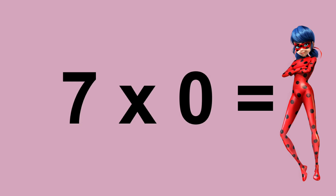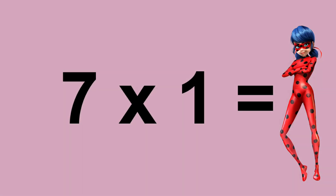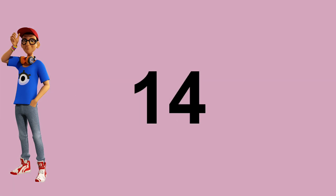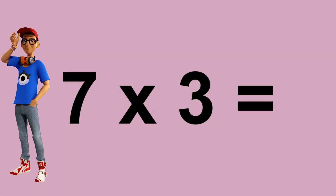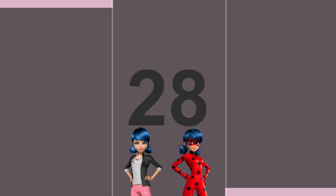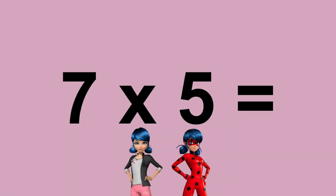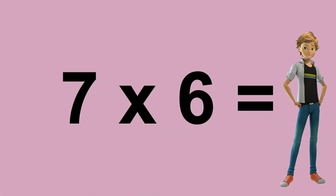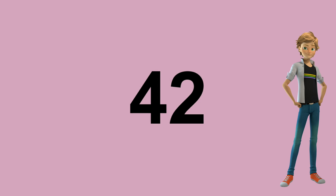Seven times zero equals zero. Seven times one equals seven. Seven times two equals fourteen. Seven times three equals twenty-one. Seven times four equals twenty-eight. Seven times five equals thirty-five. Seven times six equals forty-two.